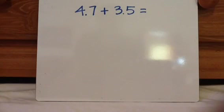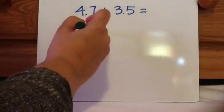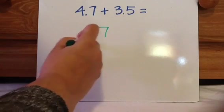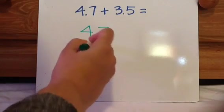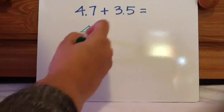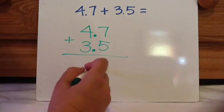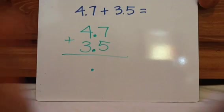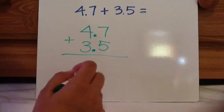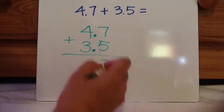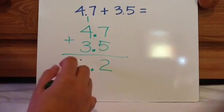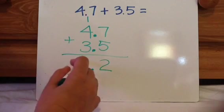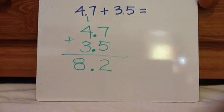So suppose you get like 4.7 plus 3.5. So your first step is to stack them and line them up. So when you add, you want to write them up and down. So your key thing is to make sure those decimals are on top of each other. And then go ahead and write your decimal in the answer. Then you're going to go ahead and add. So 7 plus 5 equals 12. Add like normal numbers. 3 plus 4 plus 1 equals 8. So your answer is 8.2.